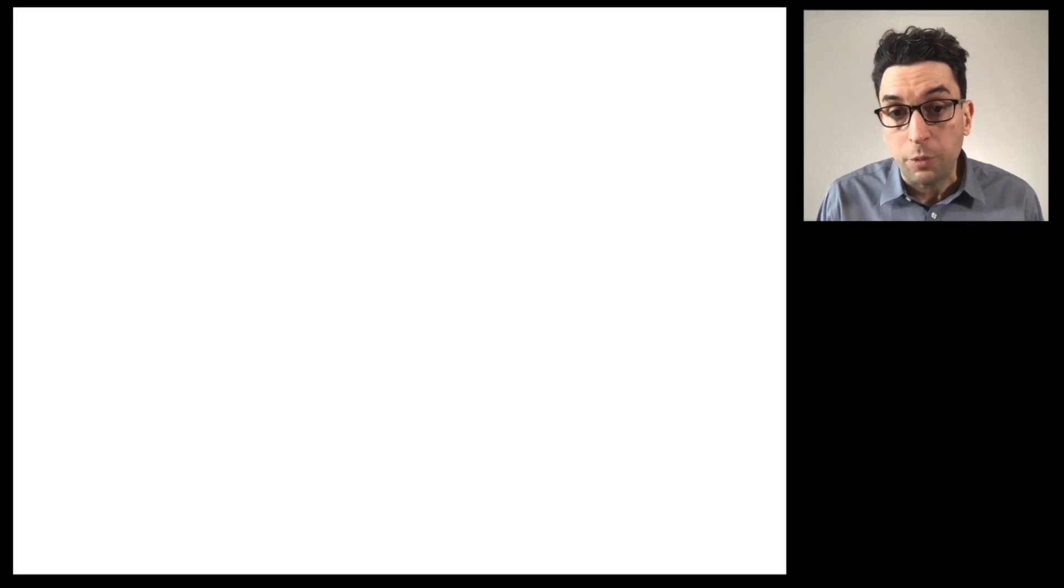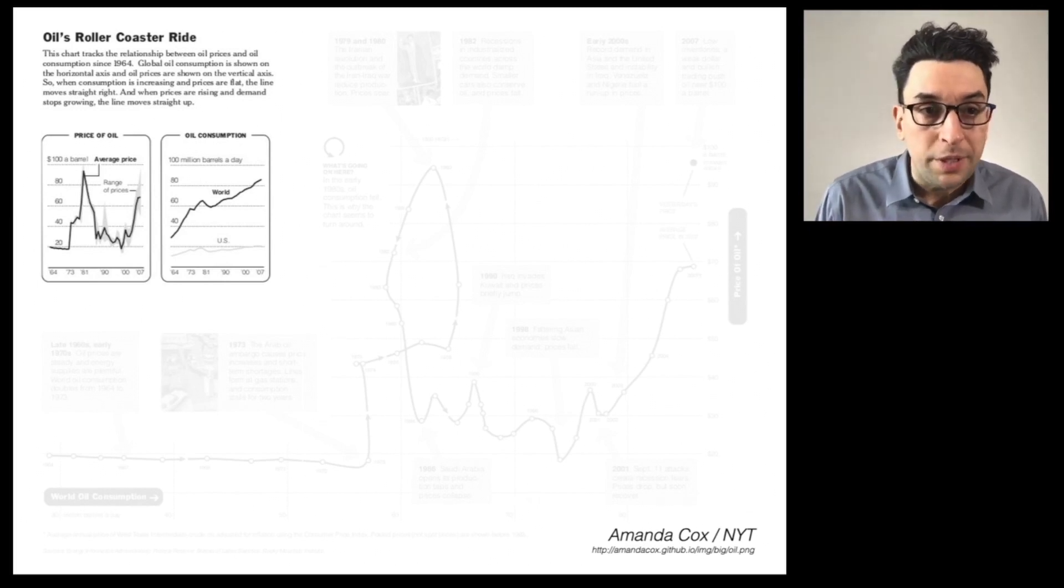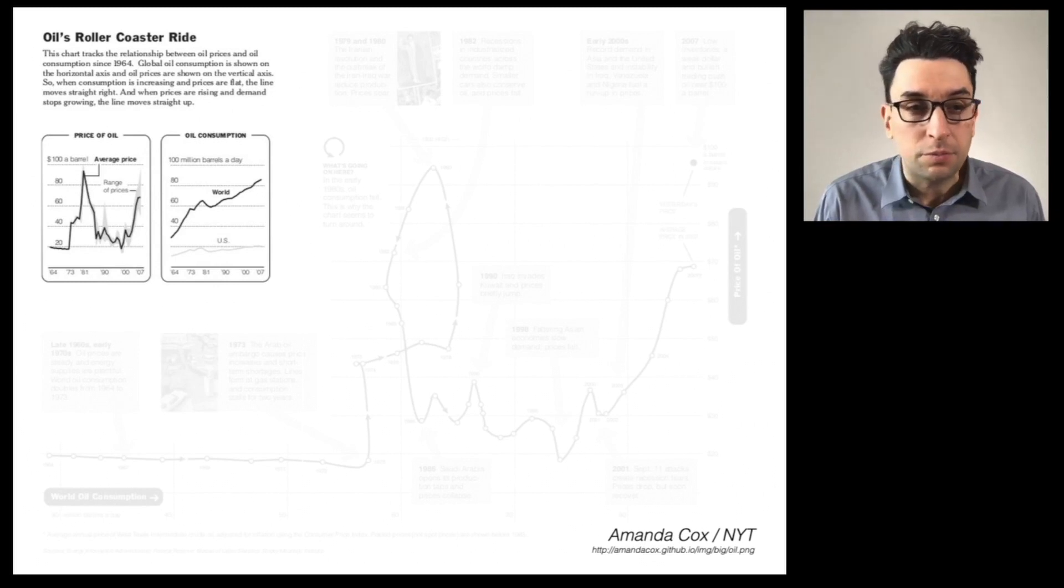I learned about this format from the work of Hannah Fairfield and Amanda Cox at the New York Times. Here's one of the stories from Amanda Cox. It's oil's roller coaster ride. You can see that we have two sets of time series data, the price of oil over time and consumption of oil over time. If you'd like to inspect the trends in either one of these types of data alone, where are the peaks, valleys, what are the trends, a line graph is a perfect format.